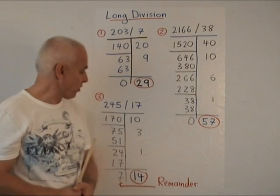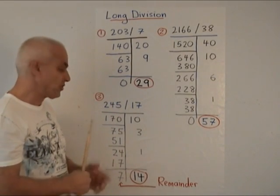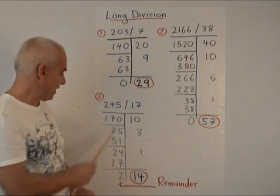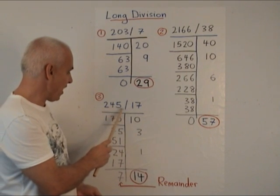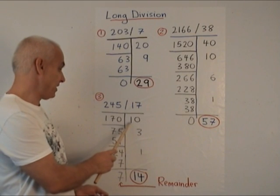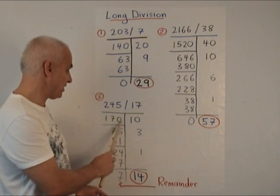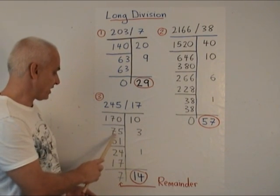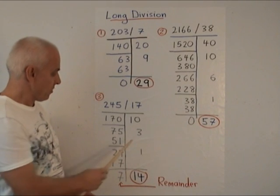Let's do one more example where things don't quite work out so well. Let's try to divide 245 by 17. So an initial first guess might be 10. 10 times 17 is 170. We subtract, we get 75.